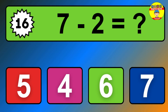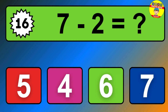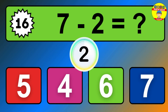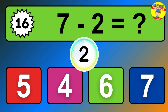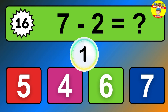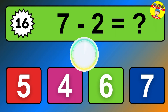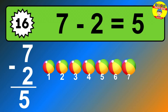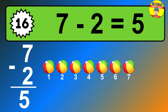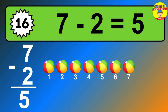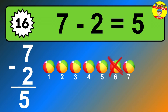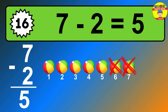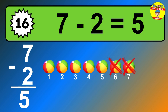Question 16. 7 minus 2 equals what? So the answer is 7 minus 2 is 5. Let's count it. 1, 2, 3, 4, 5.